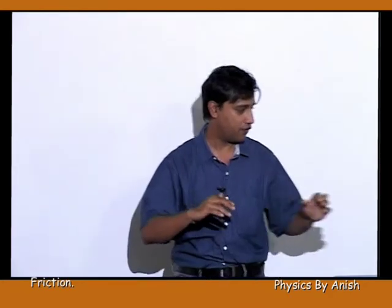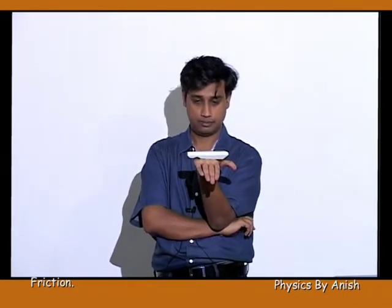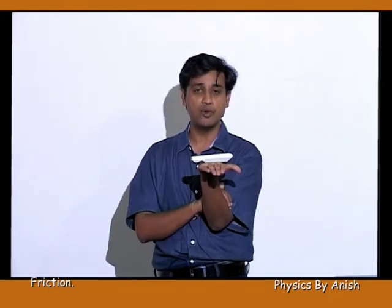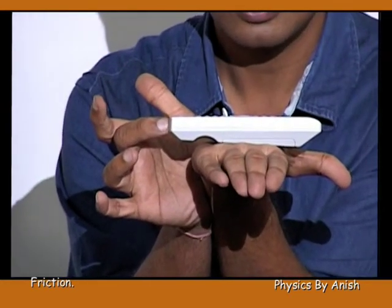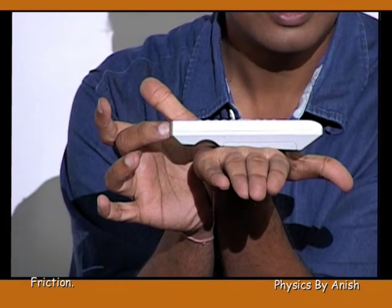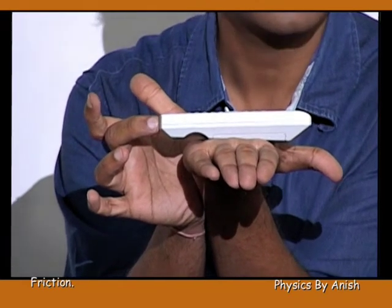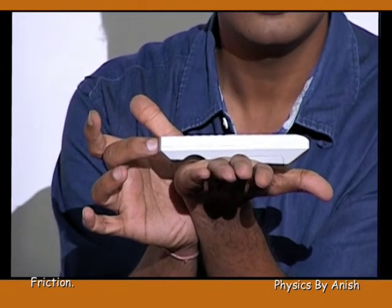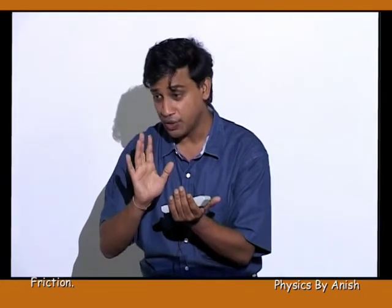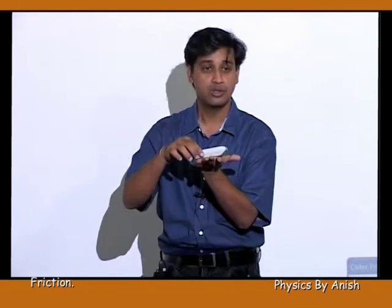For example, if there is no tendency to move, friction will not be created. If a force is applied and there is a tendency to move but it doesn't actually move — friction is stopping it. As the applied force increases but the object still doesn't move, friction also increases. So when there is a tendency to move but no actual movement, friction is being created. And if the object is actually moving, friction is also acting.